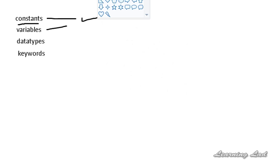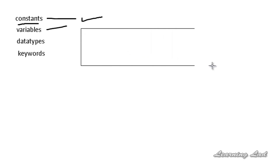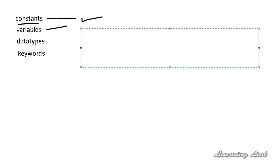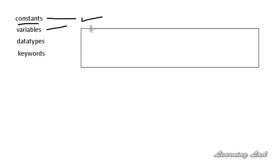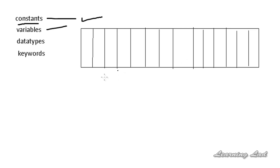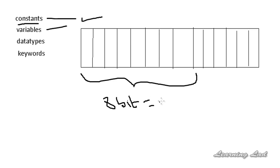In computer memory, whatever we save, the values will be stored in zeros and ones. This computer memory is divided into small bits, and these small bits are grouped to form bytes. Eight bits are grouped to form one byte, so it's eight bits equal to one byte. The values zeros and ones are stored in these bits.